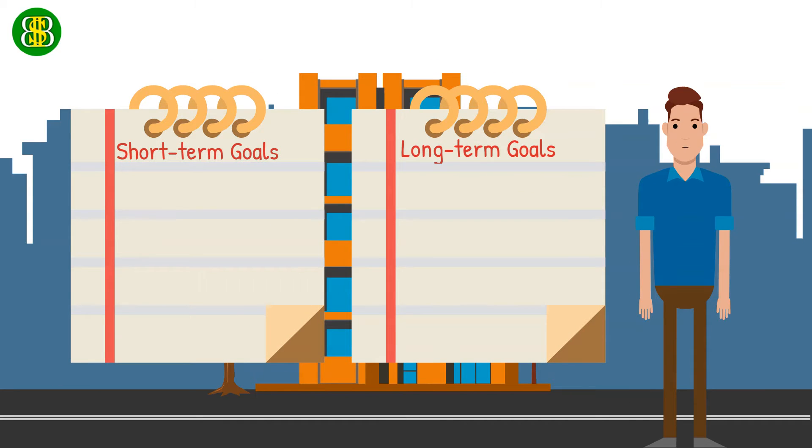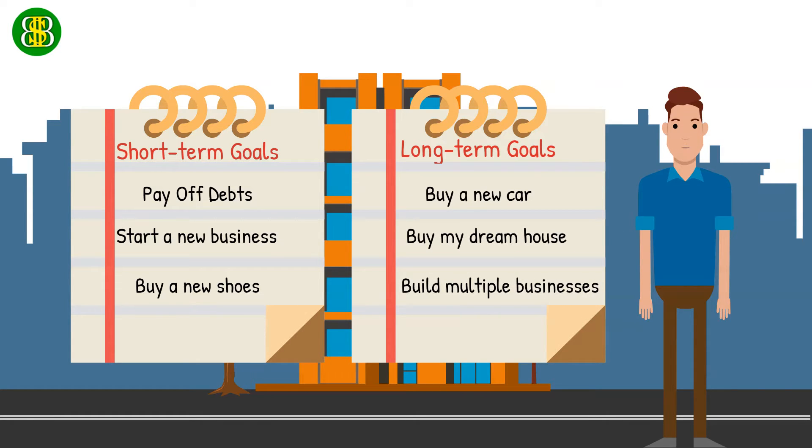You can also divide it into short-term and long-term goals. The short-term goal is one that you want to achieve in one to three years. The long-term goal is the goals you'd like to have in three years or more. It is better to write it down on a piece of paper so that you can easily see it and always remind yourself every day.